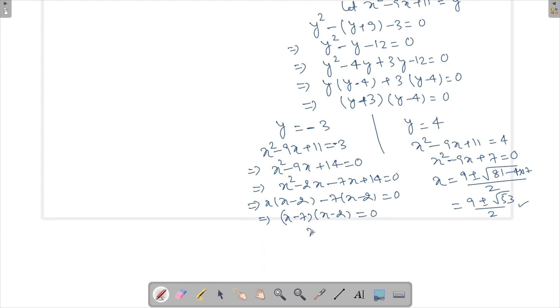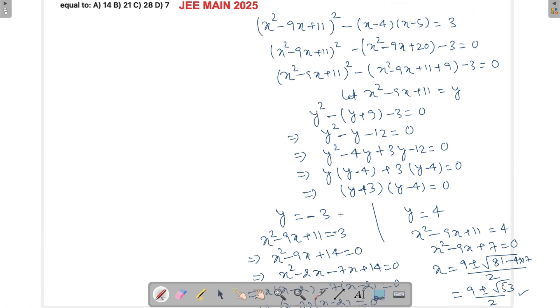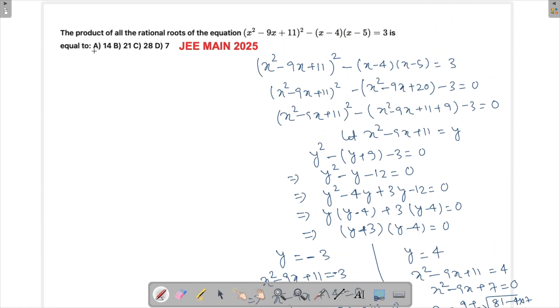So these are my two rational roots, but I want only the product of these rational roots, which is 2 × 7 = 14, and 14 is what will be your answer. That's all for this question. If you got any queries do ask me in the comment section below and I'll be happy to answer queries. Thank you so much for watching this video. Have a good day.